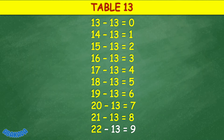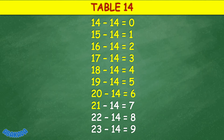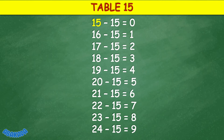Table 14: 14 minus 14 equals 0, 15 minus 14 equals 1, 16 minus 14 equals 2, 17 minus 14 equals 3, 18 minus 14 equals 4, 19 minus 14 equals 5, 20 minus 14 equals 6, 21 minus 14 equals 7, 22 minus 14 equals 8, 23 minus 14 equals 9.